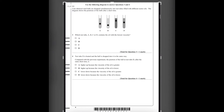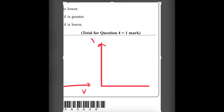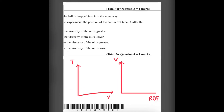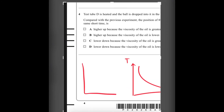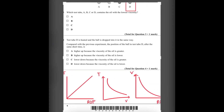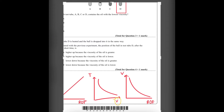Number 4: test tube D is heated and the ball is dropped into it in the same way. The temperature increases in test tube D. Compared with the previous experiment, where is the position of ball D after the same short time? Temperature is inversely proportional to viscosity, and viscosity is inversely proportional to rate of flow. So temperature and rate of flow are directly proportional — as temperature increases, the rate of flow increases. When temperature increases, viscosity decreases, and when viscosity decreases, rate of flow increases.